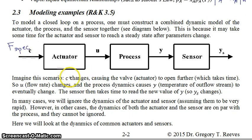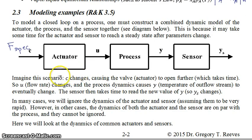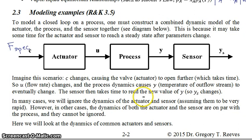When the specified flow rate c changes, it causes the valve or actuator to open further, and that opening takes time. As that happens, the flow rate changes over time, and the process dynamics cause Y — say, the temperature of an outflow stream — to eventually change. Once the temperature changes, it takes time for the sensor to read the new value of Y, so the sensor value Ys will change over time.